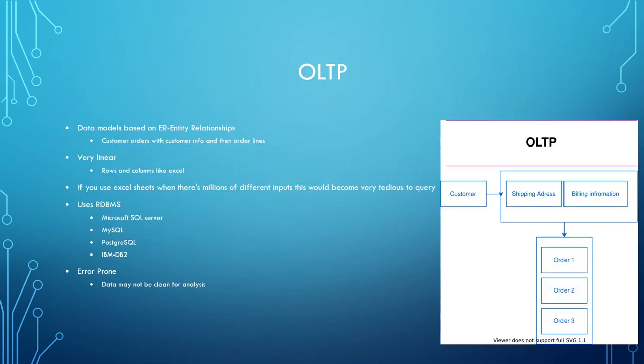Our first system is OLTP, which stands for Online Transaction Processing. The data is modeled based on entity relationships, which means mainly customer orders with customer info, order, and order lines. It's very linear, meaning rows and columns like Excel — the data is stored in rows and columns like Excel.